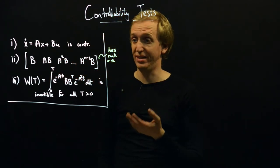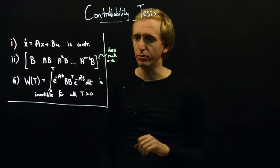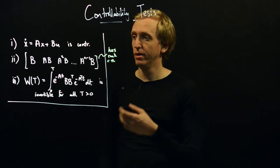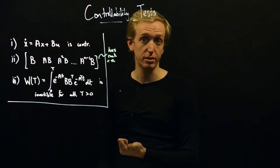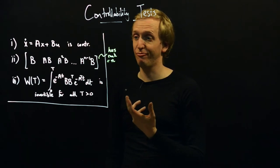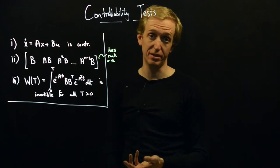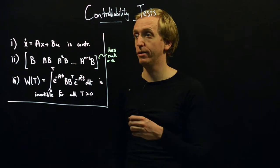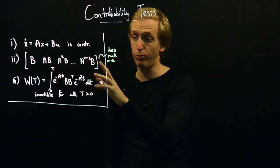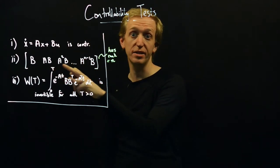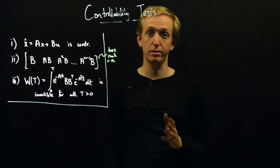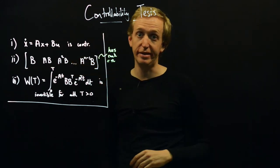The controllability test asks: what is the rank of this matrix? Rank relates to the number of independent rows or columns. For single-input systems, this matrix is always square, and a square matrix has full rank — rank N — if and only if it's invertible or has a non-zero determinant. For multiple inputs and outputs, you instead need to find N linearly independent rows or N linearly independent columns.